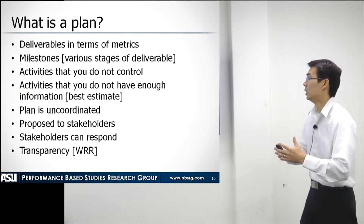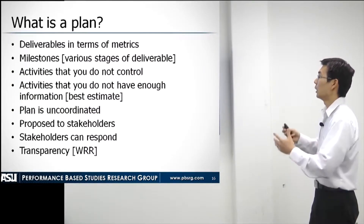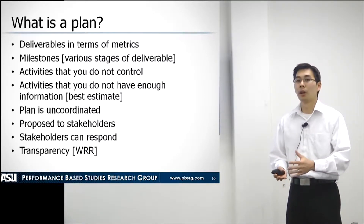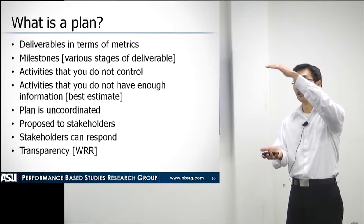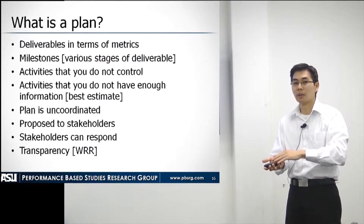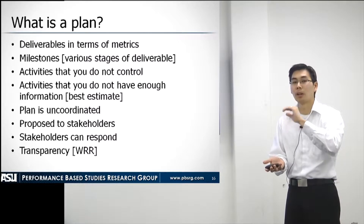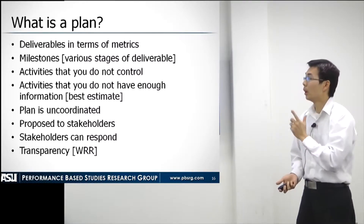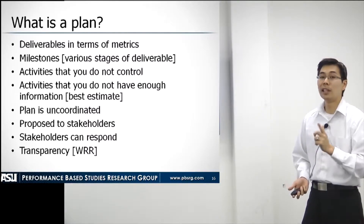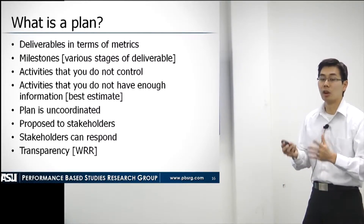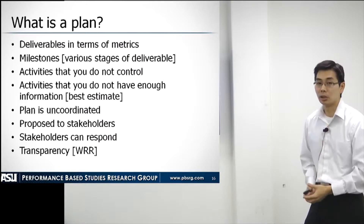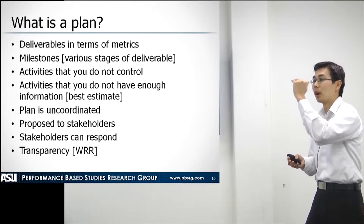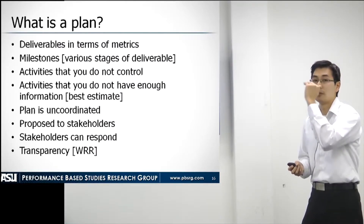What does it mean to deliver a plan? We will want the deliverables in terms of metrics. Unlike a traditional project where the contract will be based on a list of actions and technical items that the vendor will have to check mark and say they delivered, in the best value system the identification of whether they delivered the contract and the scope of work will be based off of metrics. Hence we don't care exactly if they check marked every line item or every action item.